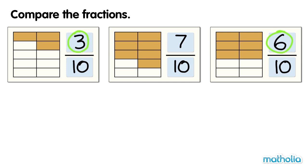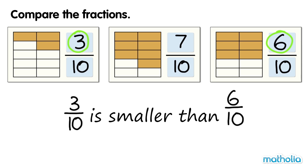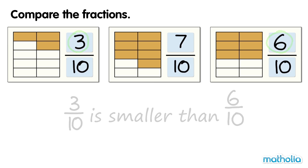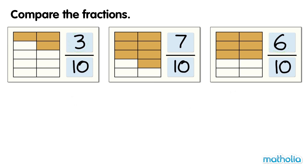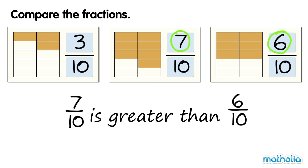Three is smaller than six, so three tenths is smaller than six tenths. Seven is greater than six, so seven tenths is greater than six tenths.